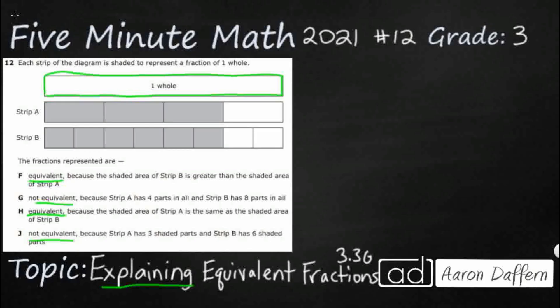So first off, are these two equivalent? Because if they are, that's going to help us at least eliminate two different answer choices. So let's name these fractions. First, we've got strip A, and we need to come up with two different numbers here. So we're going to look at the numerator and the denominator. Those are big words for third graders, but they're words that we will use again and again and again.